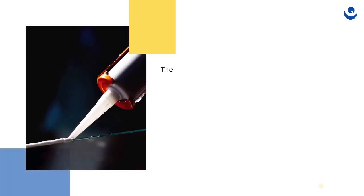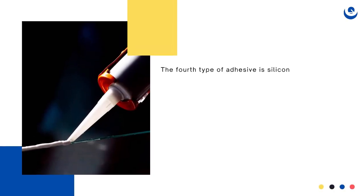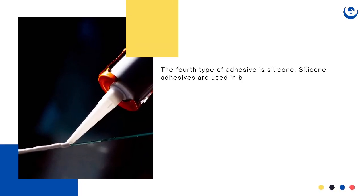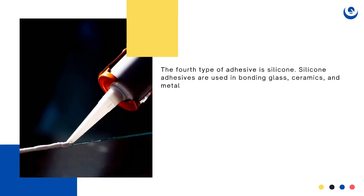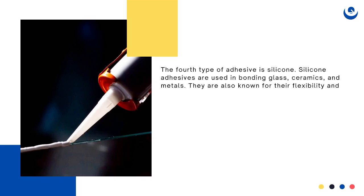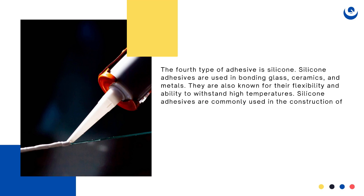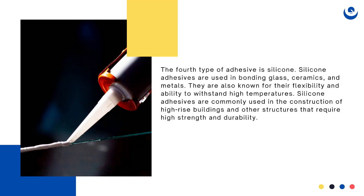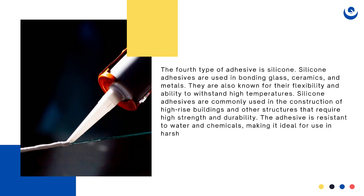The fourth type of adhesive is silicone. Silicone adhesives are used in bonding glass, ceramics, and metals. They are also known for their flexibility and ability to withstand high temperatures. Silicone adhesives are commonly used in the construction of high-rise buildings and other structures that require high strength and durability. The adhesive is resistant to water and chemicals, making it ideal for use in harsh environments.